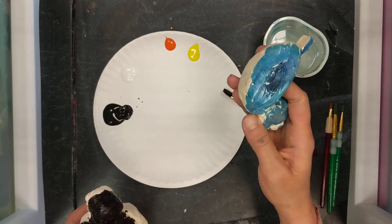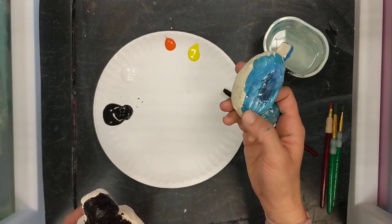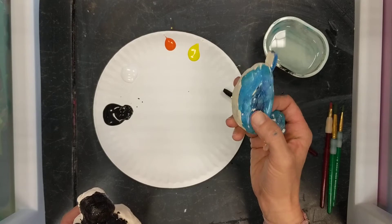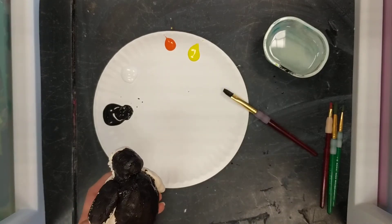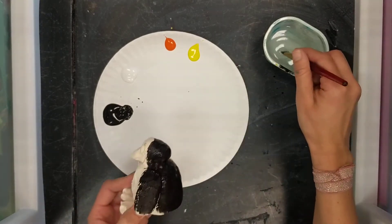For my bird, I did blue but then added some other blues, some whites, and even some black to show some different feather colors. For my penguin, he's just going to be black.